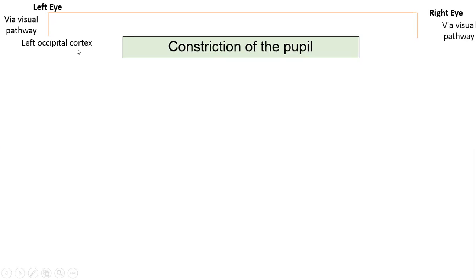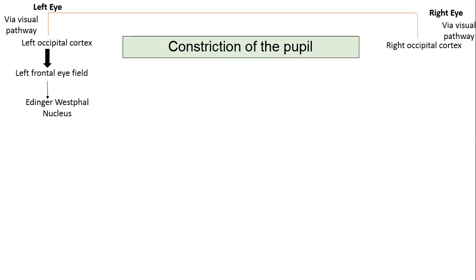It also reaches the other eye's occipital cortex through the visual pathway. From the visual cortex, fibers relay to the frontal eye field — the center of the reflex — which is present in the frontal lobe at area 8. From the frontal eye field, corticonuclear fibers pass via the internal capsule to the Edinger-Westphal nucleus of the third cranial nerve. From the Edinger-Westphal nucleus, efferent impulses travel along the oculomotor nerve and relay in the ciliary ganglion.